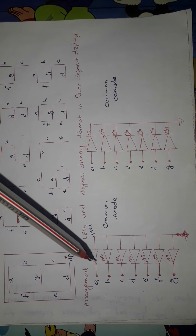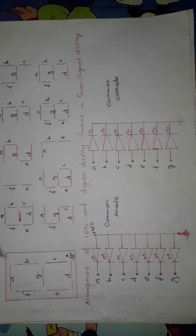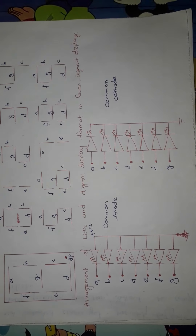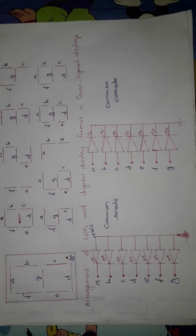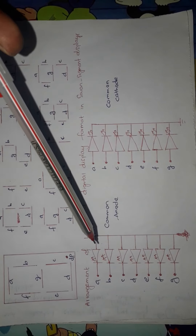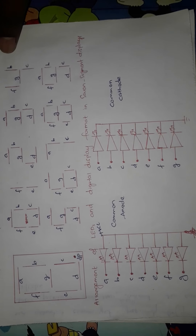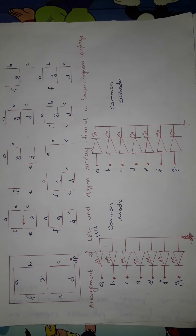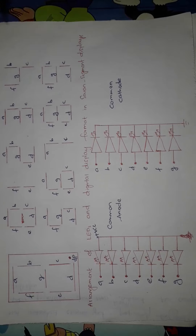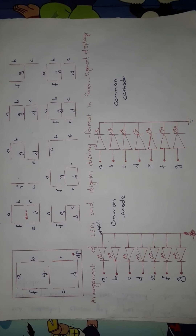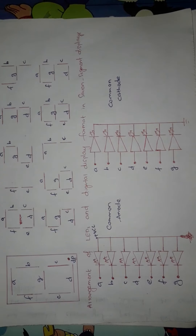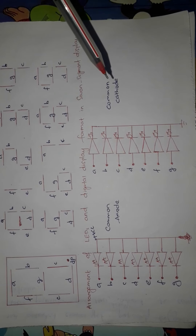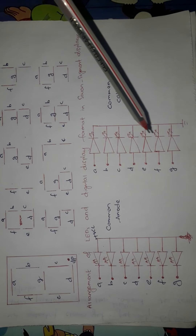For terminal A, you need to apply logic zero as input to make it glow. Similarly, to glow segment B, apply logic zero to the B segment. Applying zero at one end while the other end is connected to VCC provides forward bias for the LEDs so they glow. In common anode configuration you apply logic zero to the inputs, whereas in common cathode configuration you need to apply logic one as the inputs. In common cathode configuration, all cathodes are commonly connected to ground.